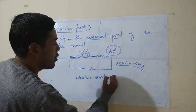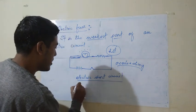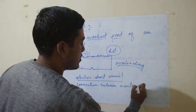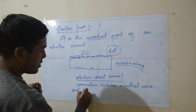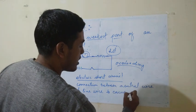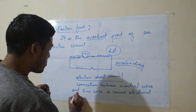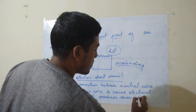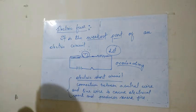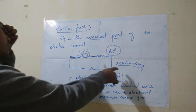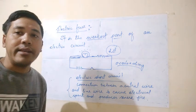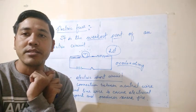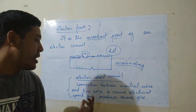What is meant by electric short circuit? There is a connection between the neutral wire and the live wire, which produces an electrical spark and causes a severe fire. This condition is known as the electrical short circuit. Due to overloading, the insulation portion of the wire becomes hot and starts to melt. After melting, the live wire and the neutral wire make contact, producing an electrical spark and then causing a severe fire.